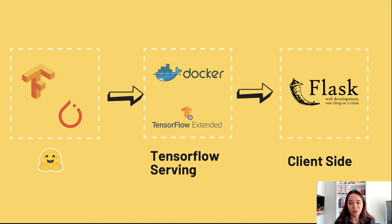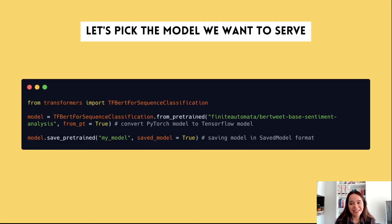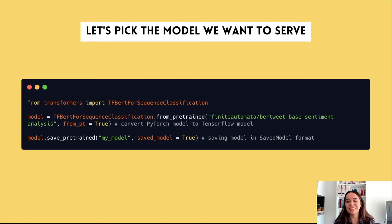In this case we will use TensorFlow Serving, create a Docker container for our model, and serve it with Flask. We take our model with TF BERT for sequence classification and use the PyTorch model and convert it to SavedModel format by first setting from_pt to true. Then we call save_pretrained on our model and set saved_model to true to save the converted model as a SavedModel.